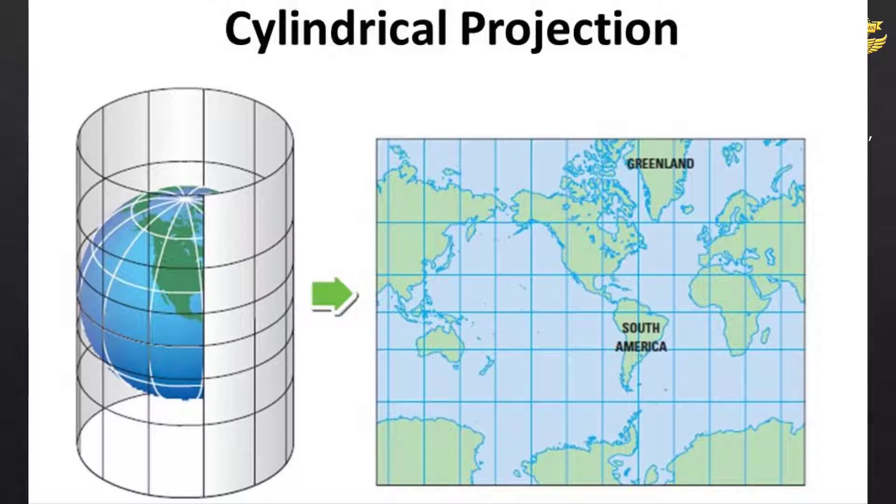We will take one example. This cylindrical projection, which we will cover in the next chapter – for now, as you can see, the paper touches only some part of global surface, or you can say equatorial region. So the scale factor is 1 only along where the paper touches the globe surface.